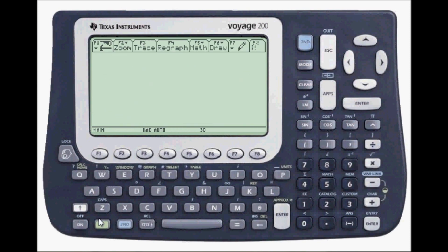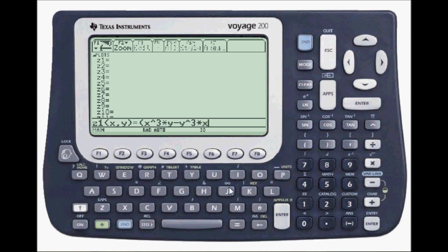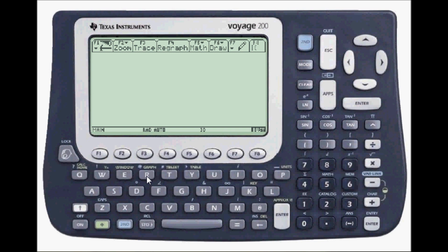And go to y equals, by pressing the green diamond key in w. Now it's z of xy form so here is an equation graph x cubed times y minus y cubed times x close parenthesis divided by 390 and press enter and now press the green diamond key in r to graph.